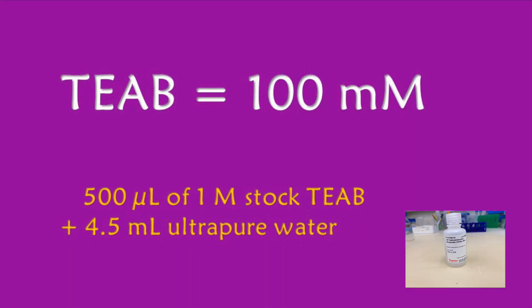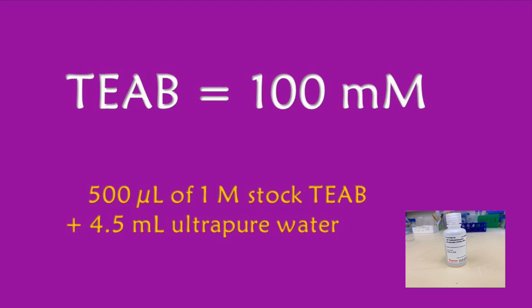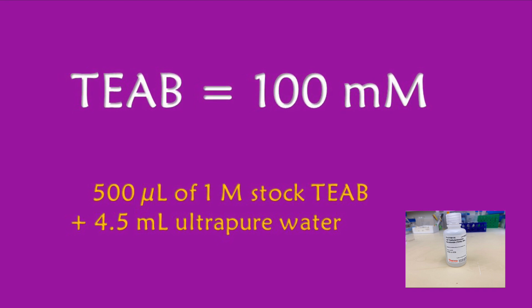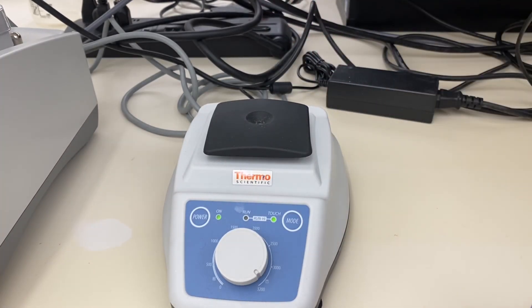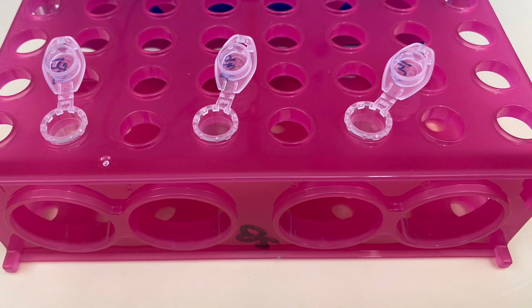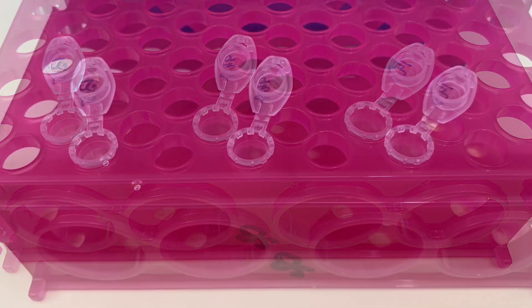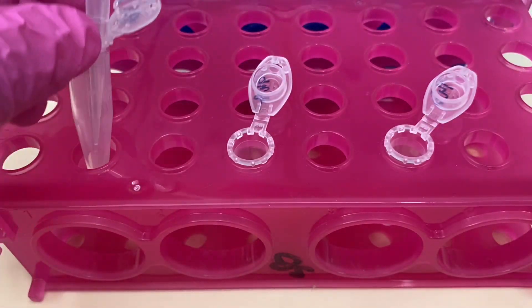TEAB buffer comes as one molar, and for my experiment I'm going to need 100 millimolar, and this is how I'm making it. So I'm going to vortex briefly the buffer and then I'm adding into the clean eppendorf tubes 95 microliters.